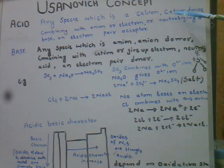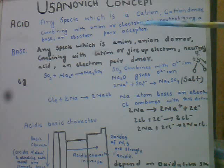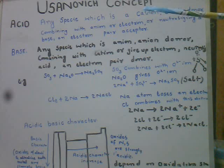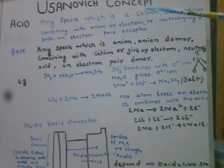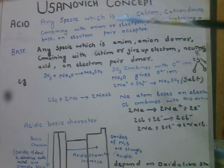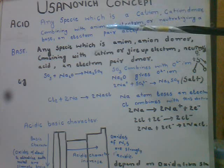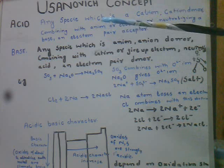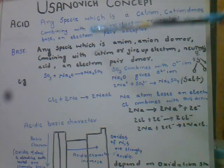Yeh cationic molecule isliye proton lose karta hai. Arrhenius concept ke mutabiq, jab hum HCl ya H2O ko water mein dissolve karte hain, to yeh hydrogen ions produce karte hain — yeh cations produce karte hain — combined with anion. Iska matlab yeh electron deficient molecule hai.